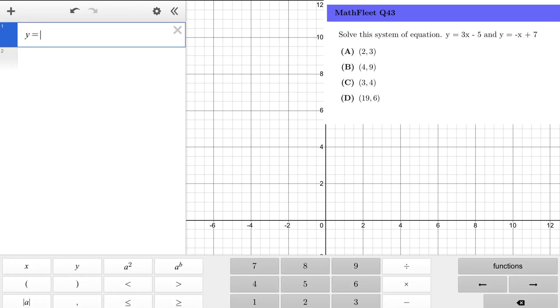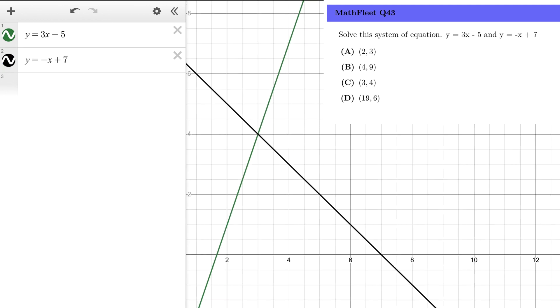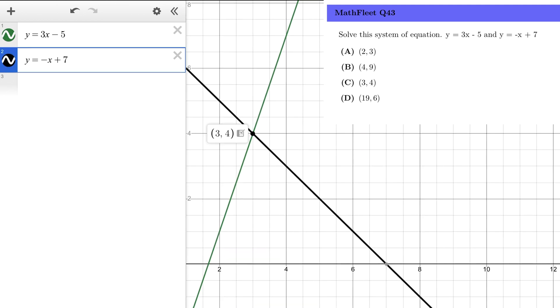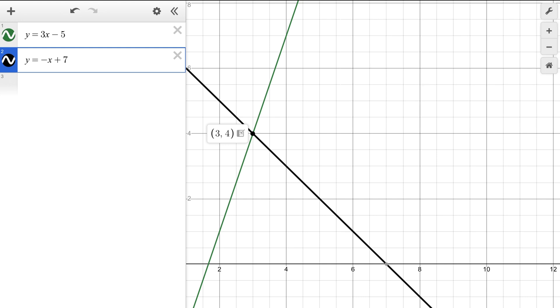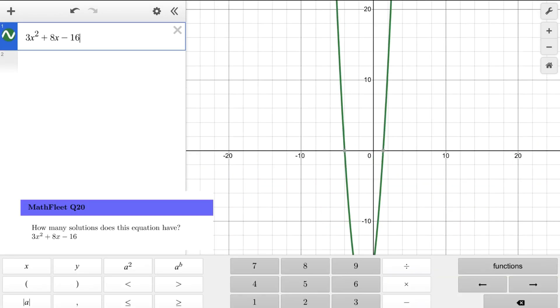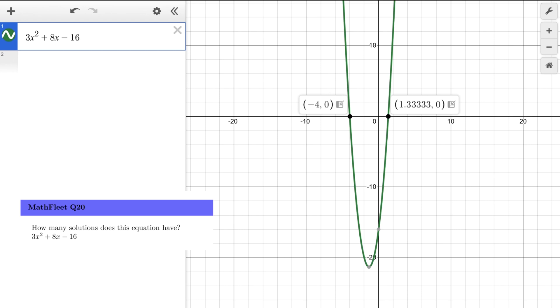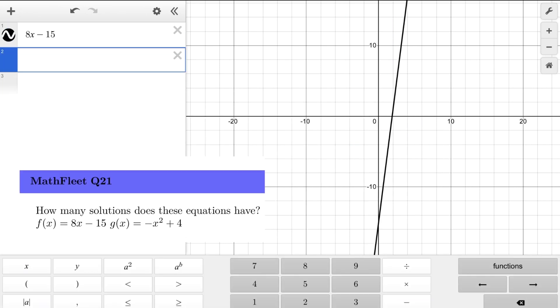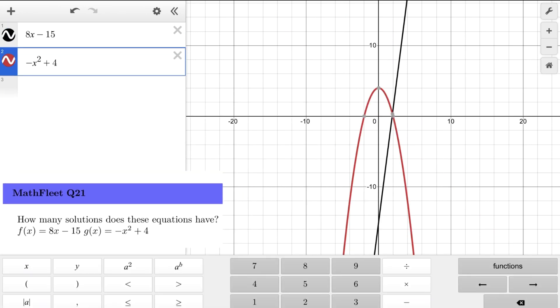In school, you'd use substitution or elimination. On the SAT, that's the slow way. The smart way? You just open Desmos, type in both equations. You're looking for the point where they intersect. You click the point. Boom. The answer is x equals 3, y equals 4. No algebra, no chance of a sign error. Just a graph and a click. This works for finding x-intercepts, vertexes of parabolas and so much more. Treat Desmos as your visual problem-solving partner, not just a number cruncher.